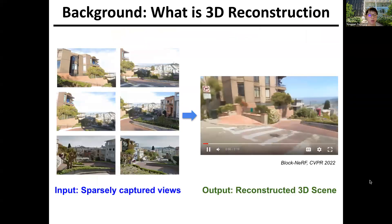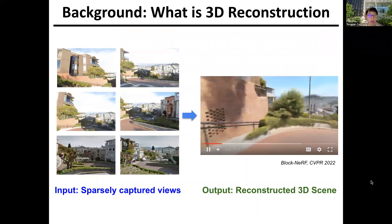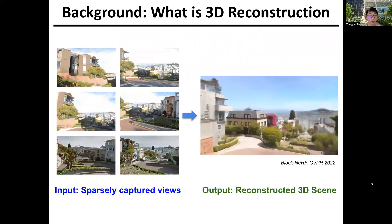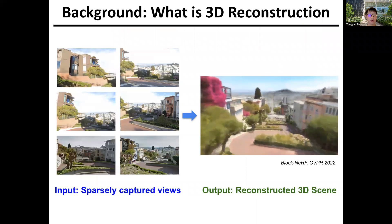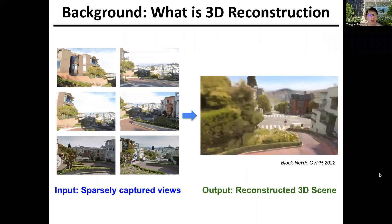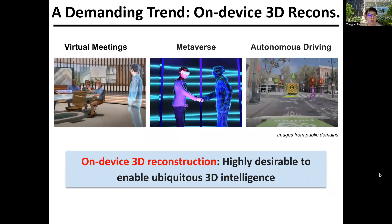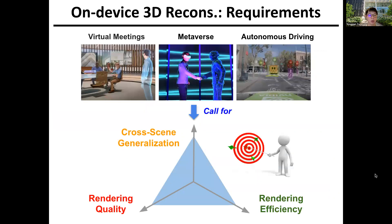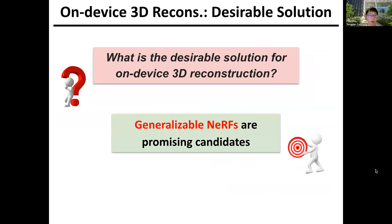Our work targets 3D reconstruction, which aims to reconstruct a 3D scene given a set of sparsely captured view images. Driven by the emerging 3D reconstruction techniques, on-device 3D reconstruction is highly desirable in numerous applications to enable ubiquitous 3D intelligence in our daily life. This demanding need requires 3D reconstruction techniques to simultaneously achieve high rendering quality, high rendering efficiency, and the capability of cross-scene generalization. The research question is: what is the desirable technical solution for on-device 3D reconstruction?